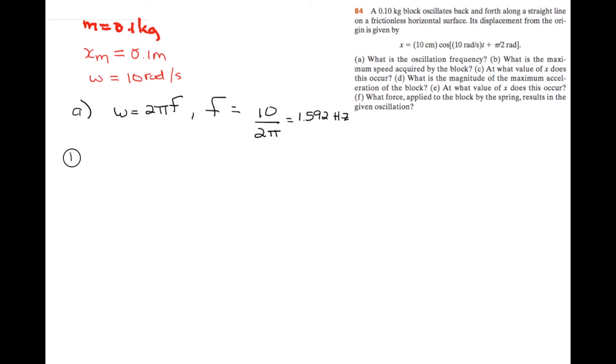b. What is the maximum speed acquired by the block? So maximum speed is equal to the angular frequency times the amplitude, which is equal to 10 times 0.1. And this is equal to 1 meter per second.